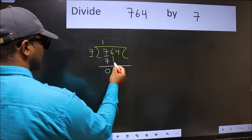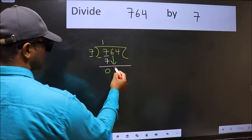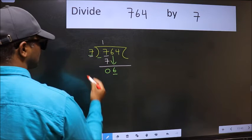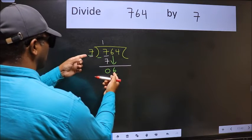After this, bring down the beside number. So, 6 down. Now, here we have 6 and here 7. 6 is smaller than 7.